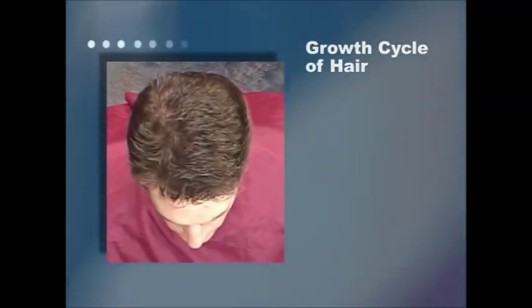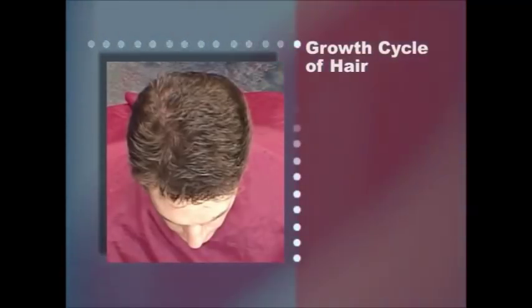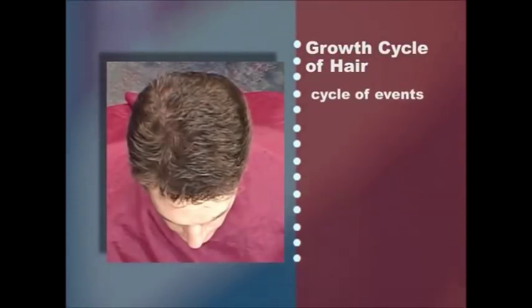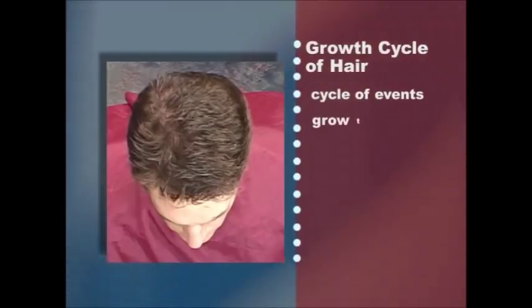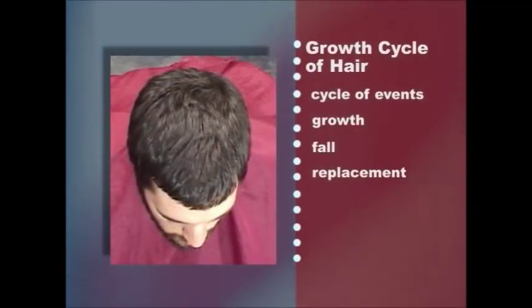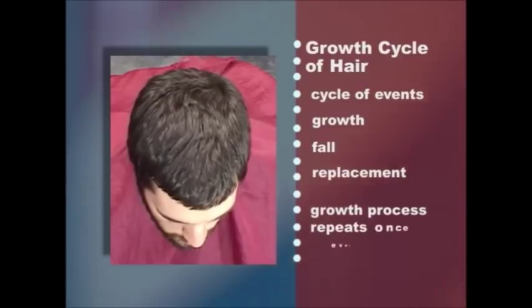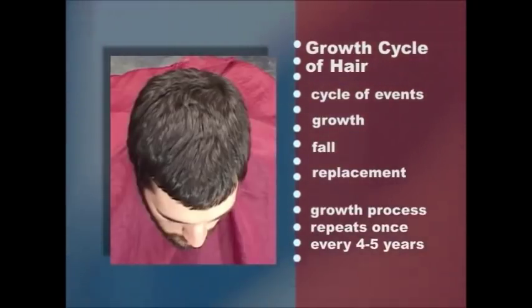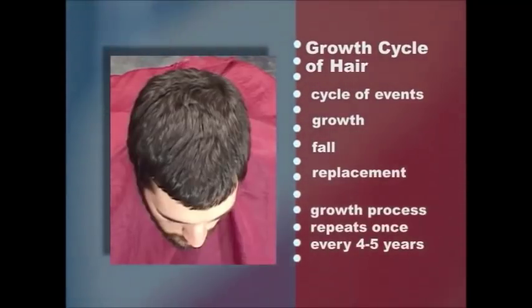In normal and healthy hair, each individual strand goes through a cycle of events: growth, fall, and replacement. On average, the entire growth process repeats itself once every four or five years.